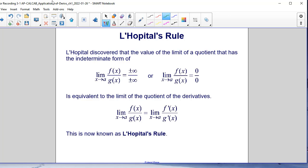We can evaluate that by taking the derivative of f of x to get f prime of x, and the derivative of g of x to get g prime of x. And we'll get the same result. That is known as L'Hopital's rule.